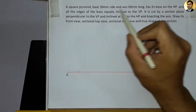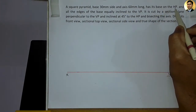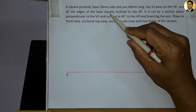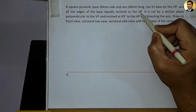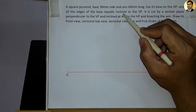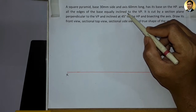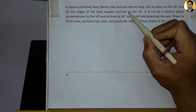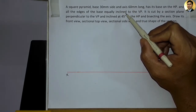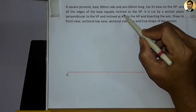Here we have been told that this square pyramid is based on the horizontal plane, and all edges of the base are equally inclined to the VP. If we have a square pyramid in the top view, then we will draw the square at 45 degrees, so that the base edges are equally inclined to the vertical plane.